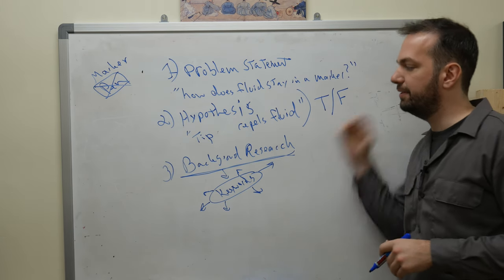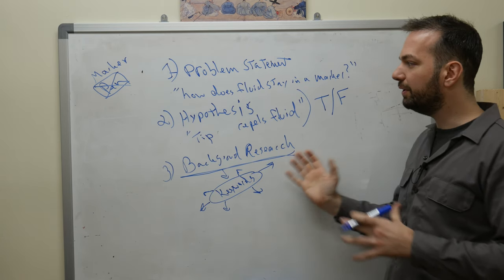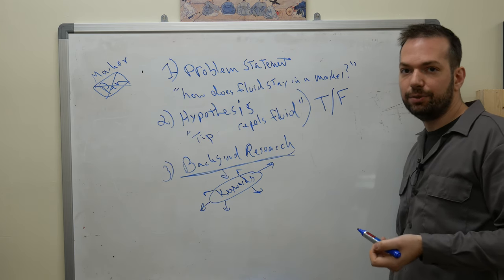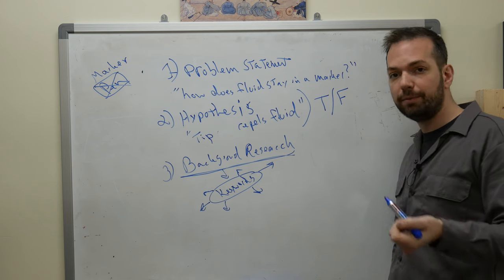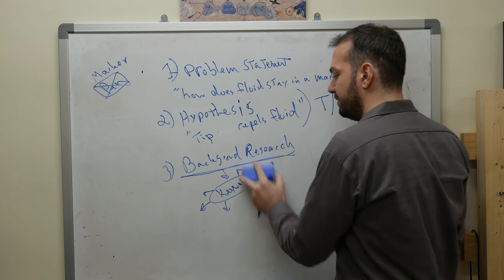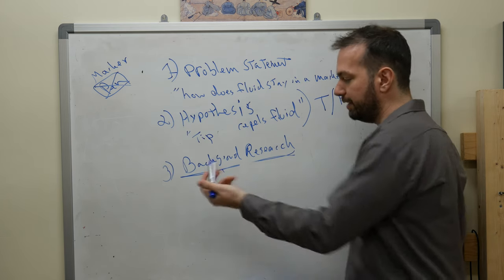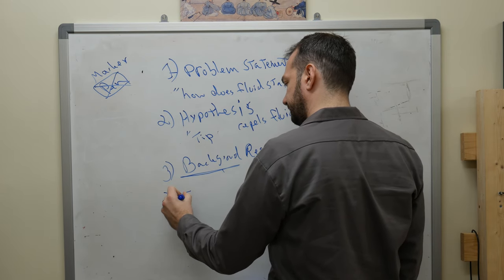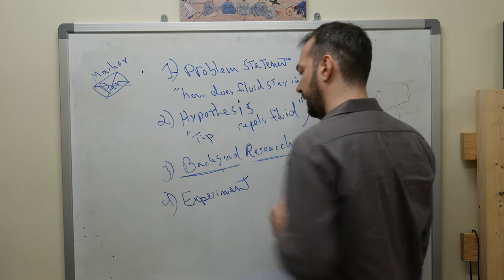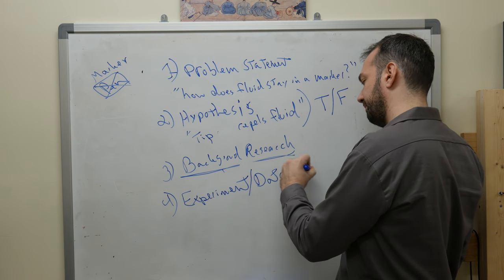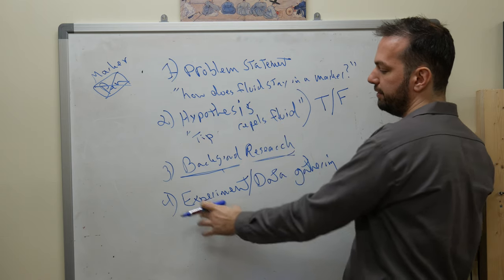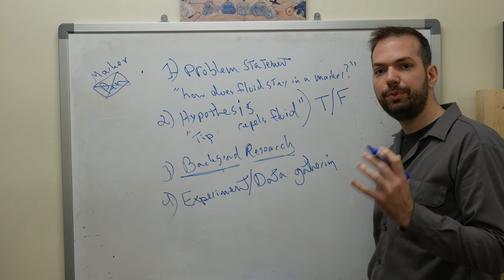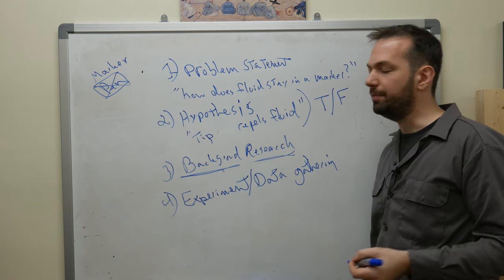Once we do background research, let's say we find that people have done some related research but didn't actually find exactly what we want. We found some things that are related and might help us structure an experiment. So we use background research as a jump point, and then start to structure our experiment — which is essentially data gathering.